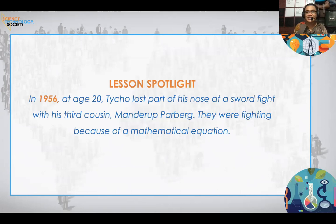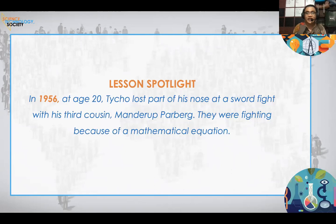Quick trivia: in 1566 at age 20, Tycho Brahe lost his nose. He got into a fight with his cousin and fellow astronomer and mathematician Manderup Parsberg — and do you know what they were arguing about? A mathematical equation. They fought with swords over a mathematical equation and Tycho Brahe's nose was cut off. It is also said that this may have contributed to his death, as poisoning may have occurred from his metal prosthetic nose.